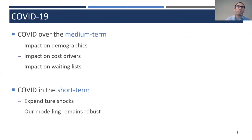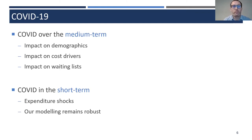COVID will also have more short-term effects that HIPPOCRATES can't model directly because they're not really related to the structural drivers of demand and cost, but we can incorporate their effects into the modeling. This includes the big increase in healthcare funding at the end of last year and a 20% increase in the health budget this year to deal with the effects of COVID. When we adjust our expenditures to account for those shocks, we find that the projected expenditure still falls within our range over the medium term — a reassuring check of the modeling.